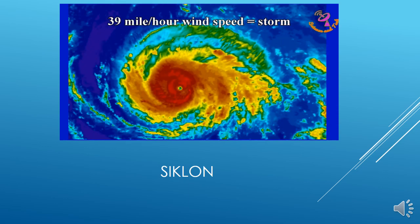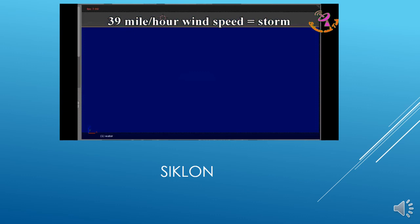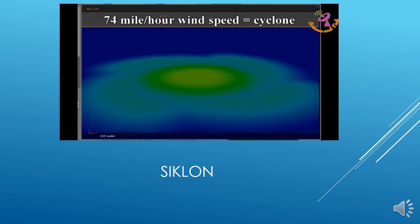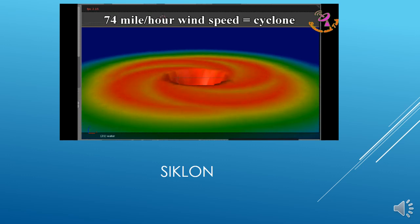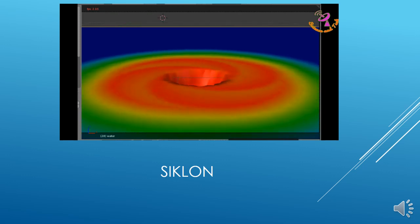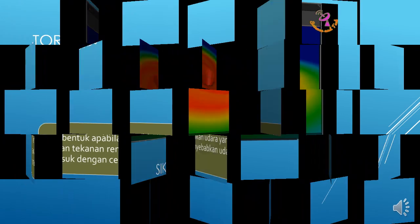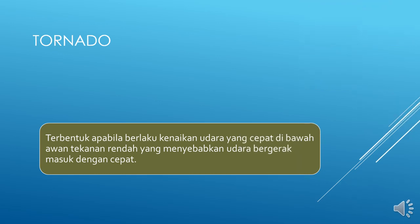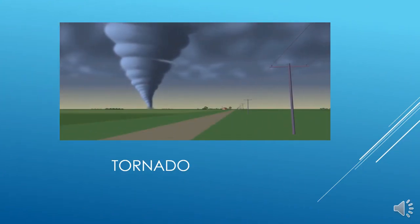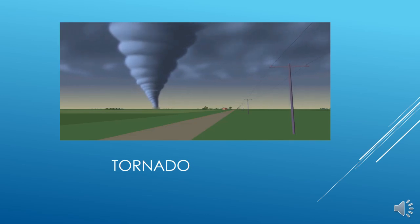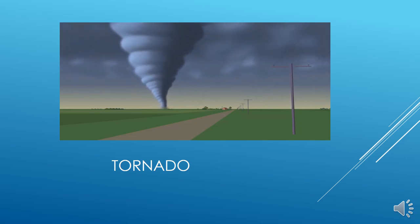When the storm's speed is 39 mph, then it is called a tropical storm, and when the storm obtains a speed of 74 mph, then it is officially announced as a tropical cyclone. Swirling, funnel-shaped winds of a tornado are easily recognizable, and they can be very dangerous. But what causes these unique and violent winds?